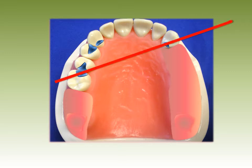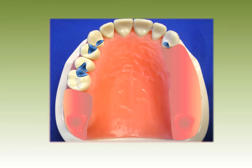Now we are ready to join these components across the arch with a palatal plate major connector. The connector is extended so that the base will cover the tuberosity. Draw the bead line on the cast.